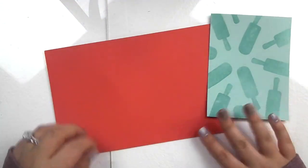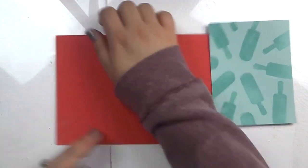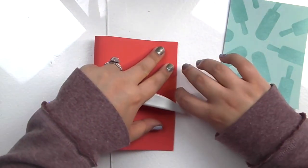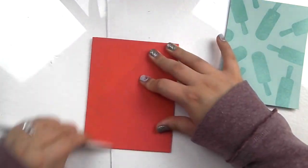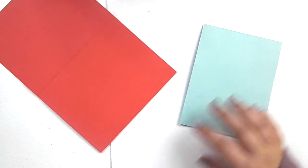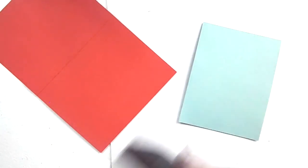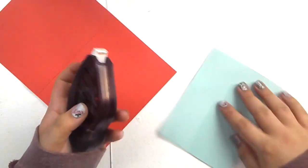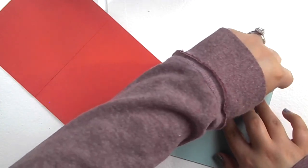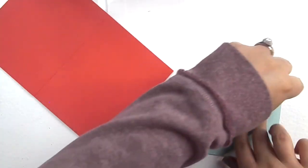I'm going to go ahead and fold my card base in half, just like this. And I'm actually going to be using our fast fuse to put this piece down just because it is embossed. And sometimes when you use so much embossing powder, it warps the piece a little so I don't want this to come up at all.